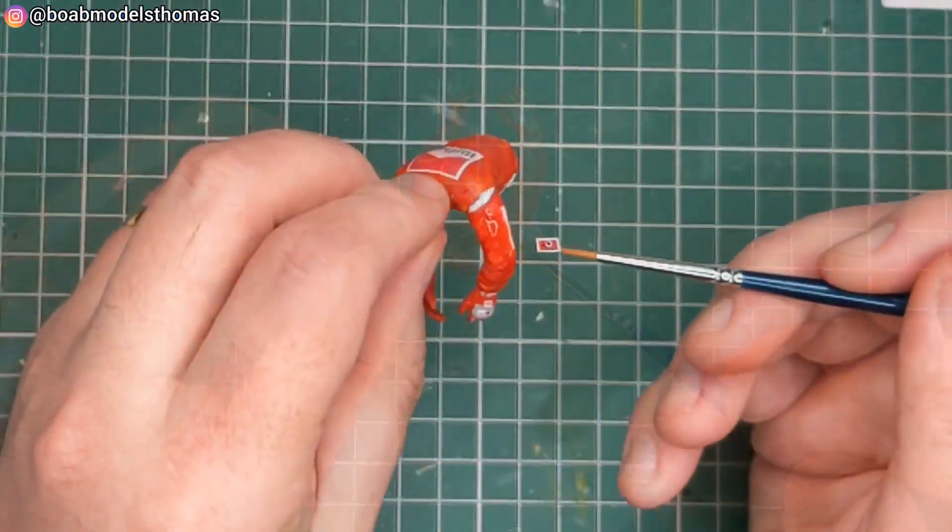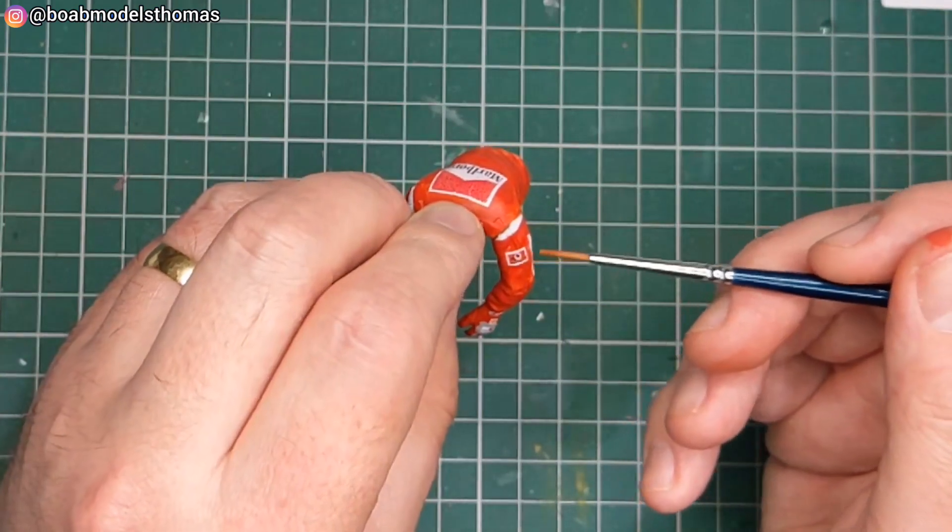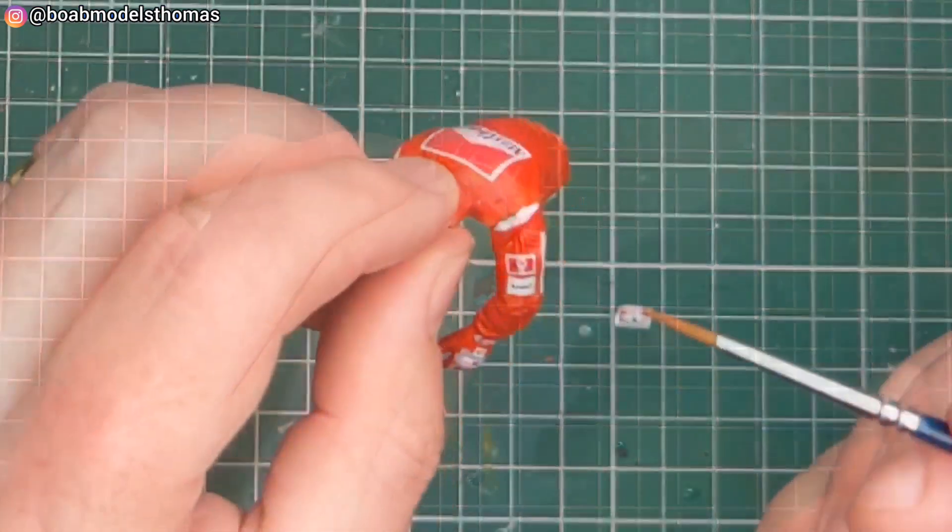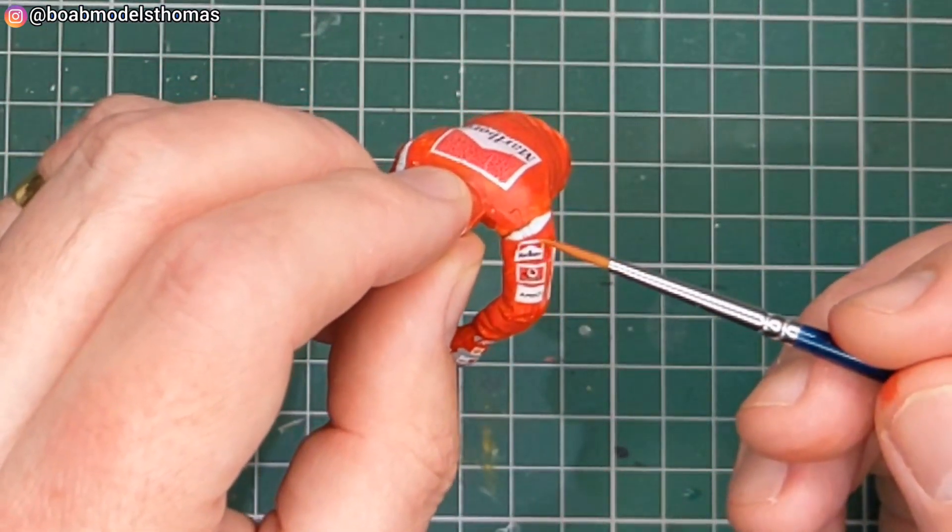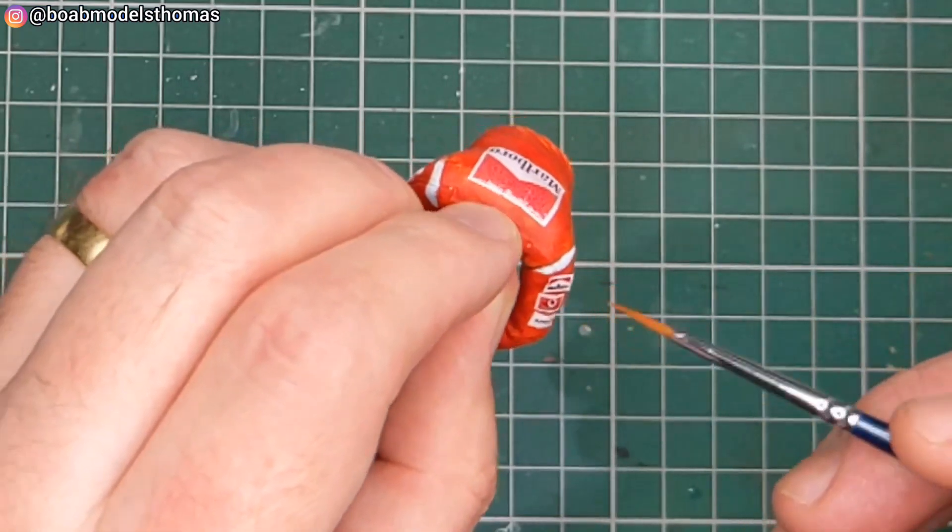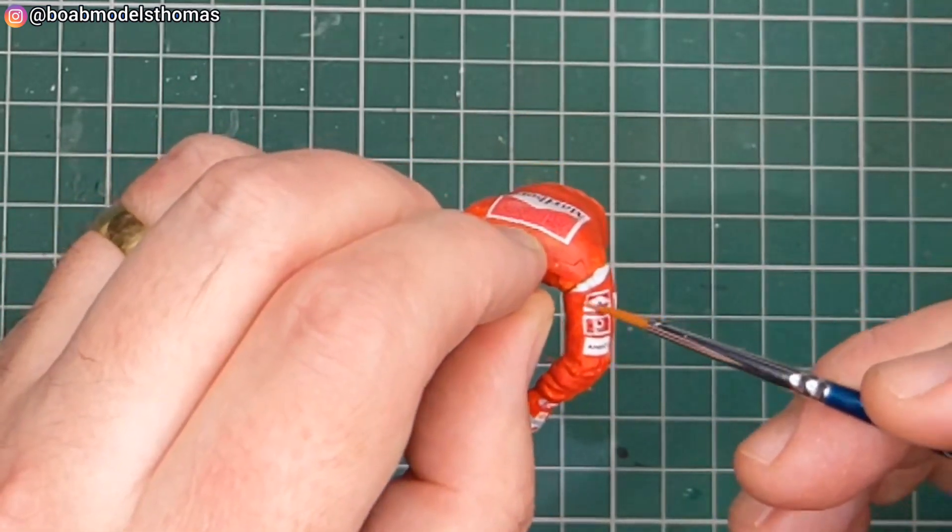It's then time for the decals on the arms. It's Vodafone one which goes in the middle. There's an AMD one which goes at the bottom and the Marlboro one goes at the top. Again micro set on first and then micro sol over the top really help them settle as best as possible.